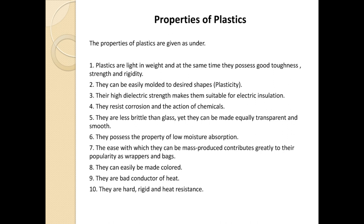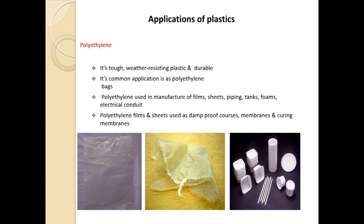Plastics can easily be made colored by adding colorant additives — we will see more about additives in next videos. They are also bad conductors of heat, so in many applications we prefer them as heat insulators. Additionally, they are hard, rigid, and heat resistant. These are the key mechanical, thermal, and chemical properties of plastics.